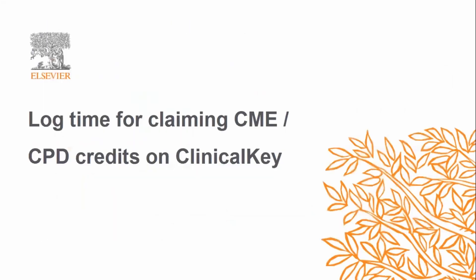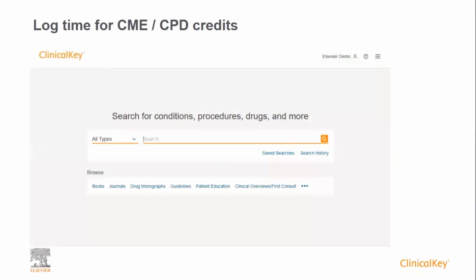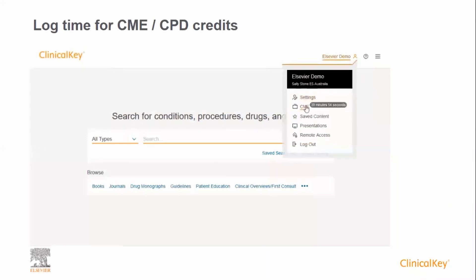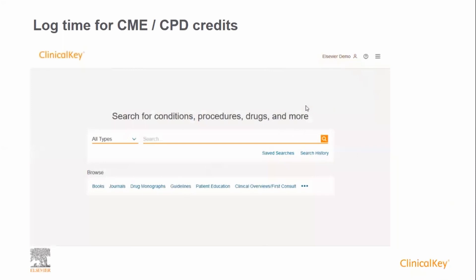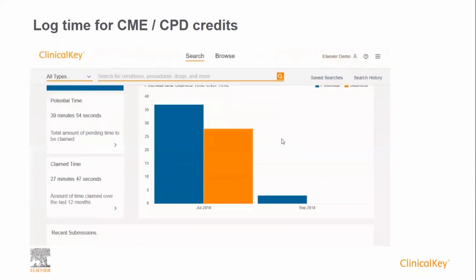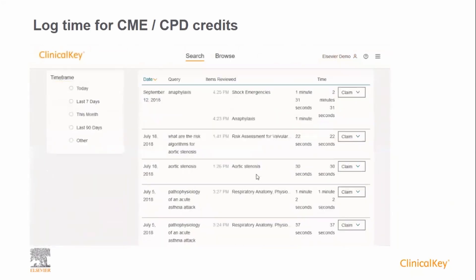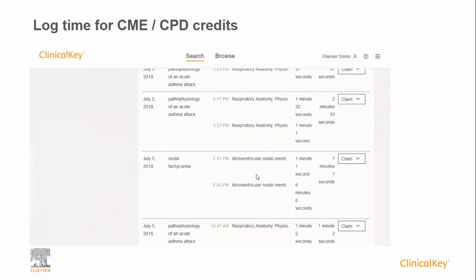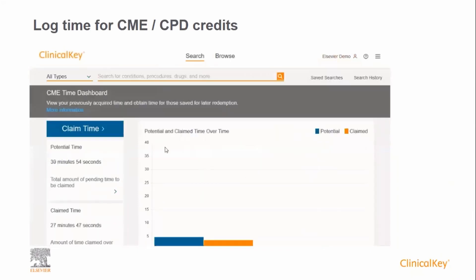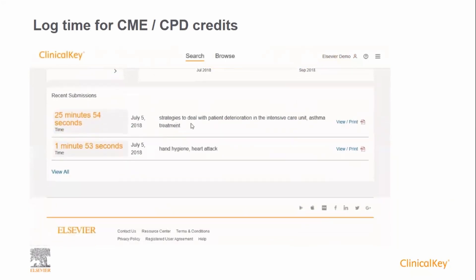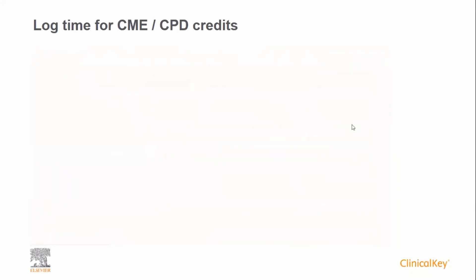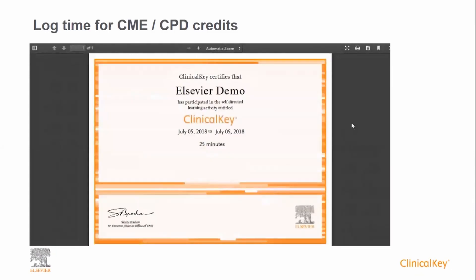With ClinicalKey, you have the ability to track time when carrying out research and reading in order to claim CME or CPD points. Note that you will need a personal account to be able to do this. If you click your name on the ClinicalKey homepage, you will see the CME option. Clicking on this brings up the CME dashboard. ClinicalKey logs time spent researching and this can be viewed by clicking on the potential time link. You can use or print out this log to assist when claiming CME points as part of self-assessments. Alternatively, you can submit the time in ClinicalKey and print out the certificate.